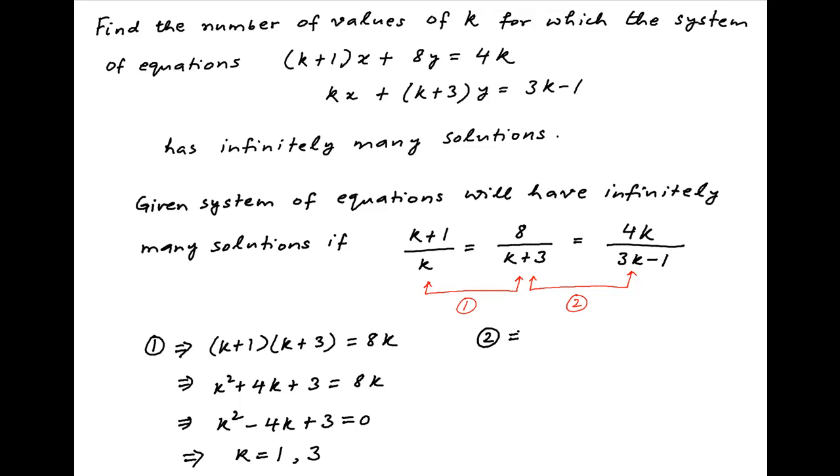Equation 2 implies that 8 times (3k-1) is equal to 4k times (k+3), and therefore 24k - 8 is equal to 4k² + 12k. This implies that 4k² - 12k + 8 is equal to 0.